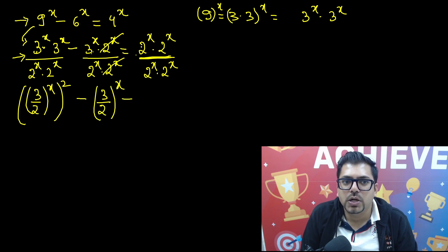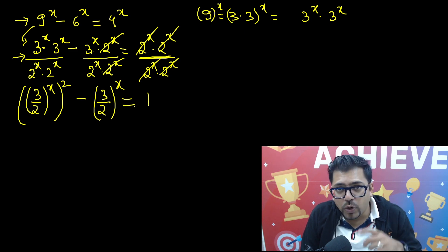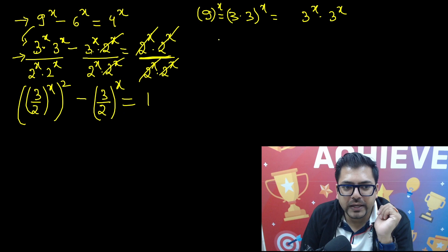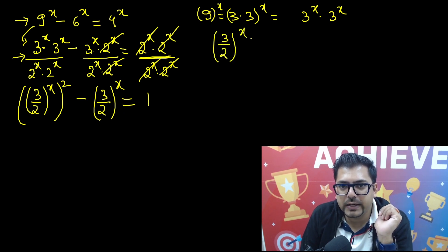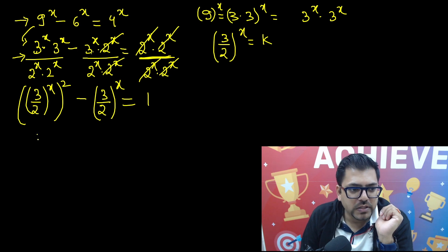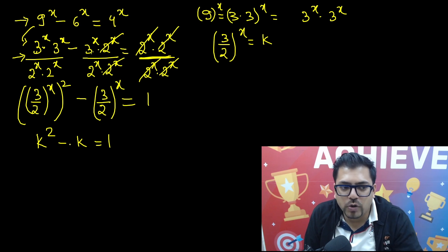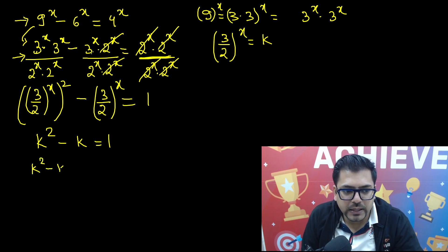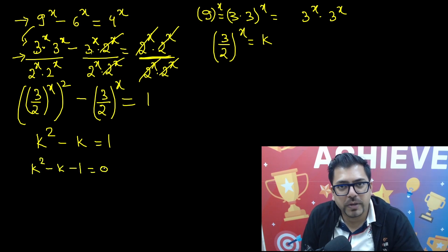Minus 2 raised to power x, 2 raised to power x gone cancel, and hence we have got 1. So what benefit is it going to give me? Now I can very easily assume that 3 by 2 whole raised to power x, I can again assume as k. This will become my k squared minus this will become k equals to 1.